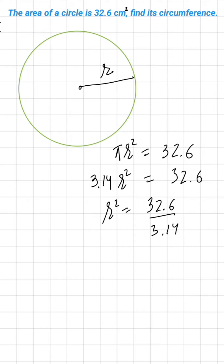Now if you divide 32.6 by 3.14, then you will get 10 point something. So this is 10.38. Then R will be square root of 10.38.